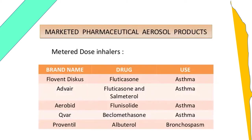Marketed pharmaceutical aerosol products — examples of MDI: Flovent (fluticasone) for asthma; Advair (fluticasone and salmeterol) for asthma; Aerobid (flunisolide) for asthma; QVAR (beclomethasone) for asthma; Proventil (albuterol) for bronchospasm.